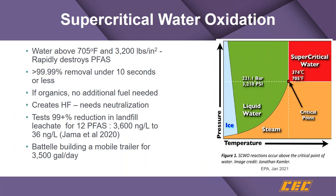Another technology EPA is looking at is supercritical water oxidation, above 705 degrees Fahrenheit and 3,200 PSI. At this point, PFAS constituents are rapidly destroyed. A company in Sweden manufactures a containerized system. Where there is a significant amount of organics, no additional fuel is needed to maintain those conditions, and tests have shown significant reductions in PFAS constituents.